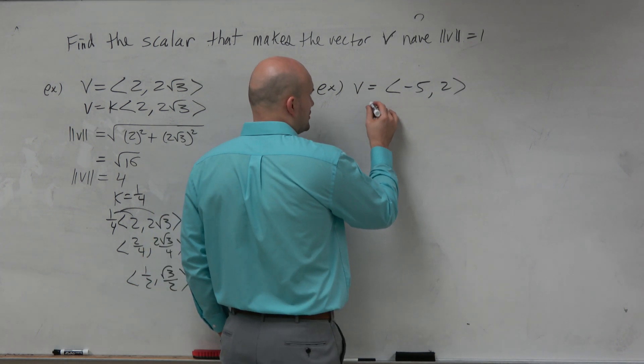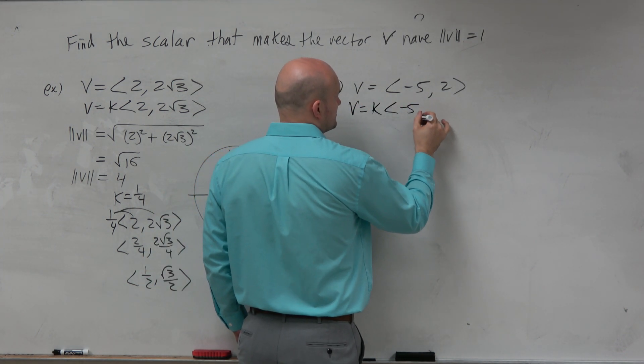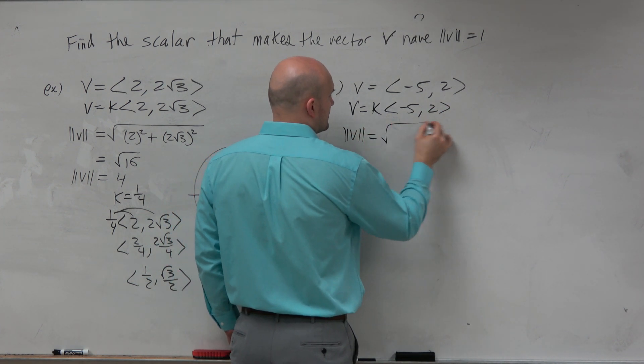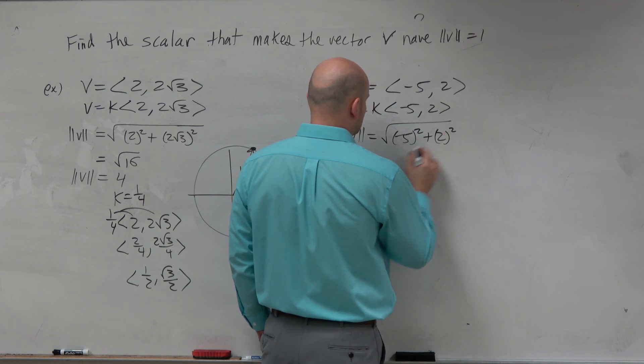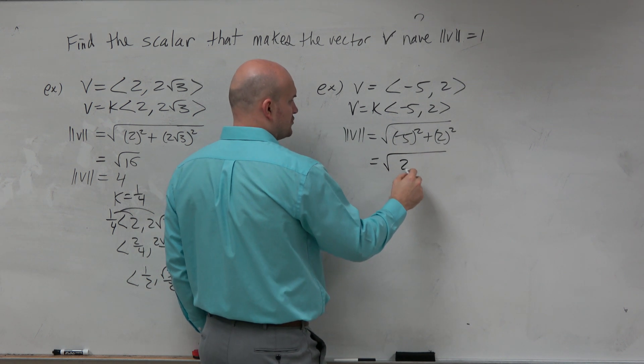Let's do the same thing, guys. Again, we're looking for this vector k. So let's go ahead and figure out the magnitude of v. That's going to be negative 5 squared plus 2 squared. And in this case, we get 29.